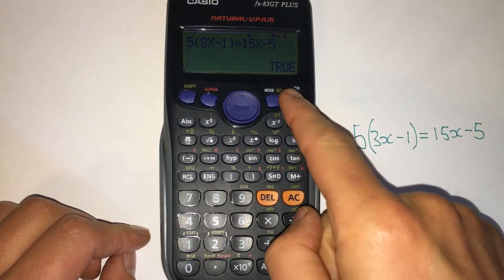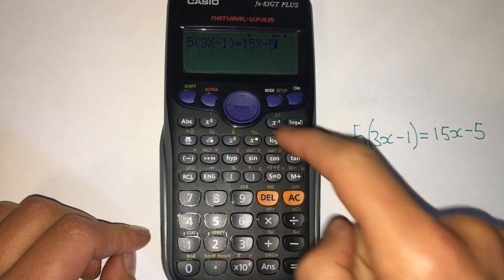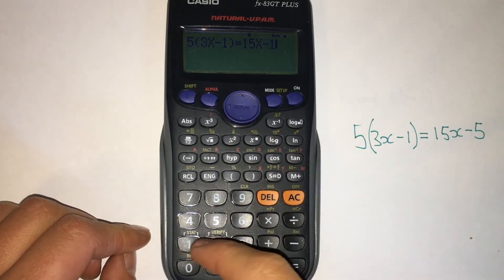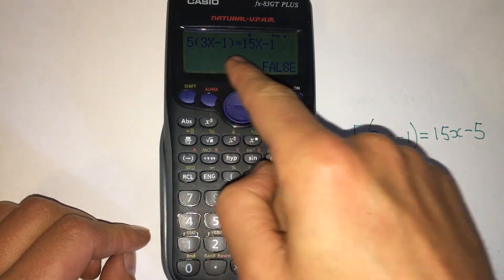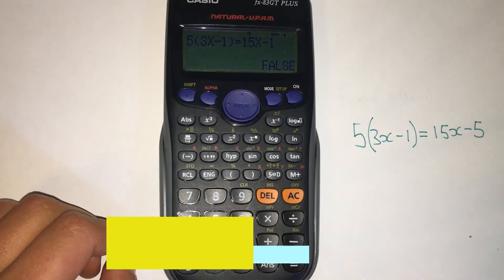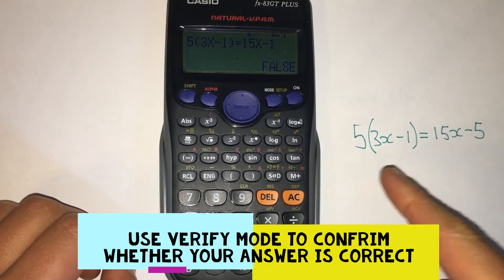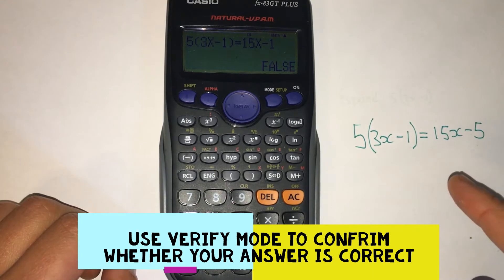And when I press equals down here, it tells me that this is true, so my answer is correct. If I replay this and I change my minus five to a minus one and now I press equals, it's telling me that it's false. This is a great little trick to use in an exam to check or verify whether your answer is correct or not.